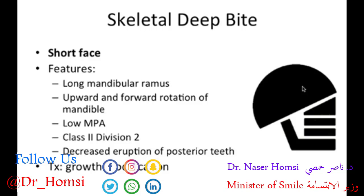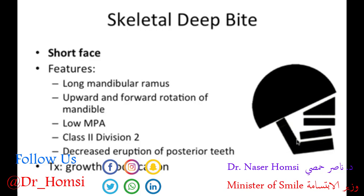Here is the normal craniofacial complex, and then we get the longer mandibular ramus with upward and forward rotation of the mandible — opposite of the open bite case. This results in a shorter face anteriorly and a longer craniofacial complex posteriorly.